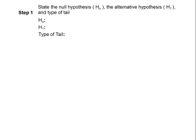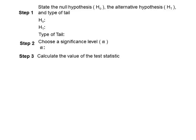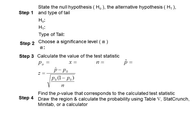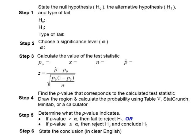Let's first recall the outline for the six steps. Step one, we state the null and the alternative and the tail type. Step two, we state the level of significance, the alpha level. Step three, we calculate the value of the test statistic using the formula for proportions. Step four, we find the p-value from a table, StatCrunch, or Minitab. Step five, we determine our outcome — either fail to reject H0 or reject H0 and conclude H1. Step six, we state the conclusion of the test in clear English.